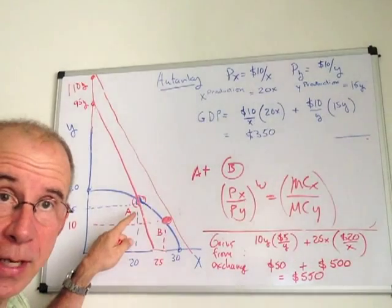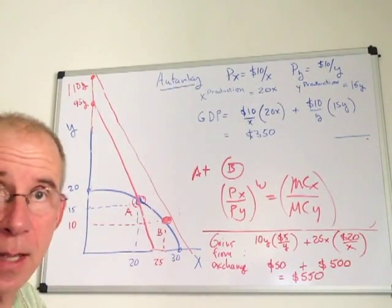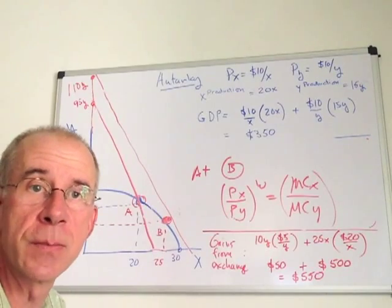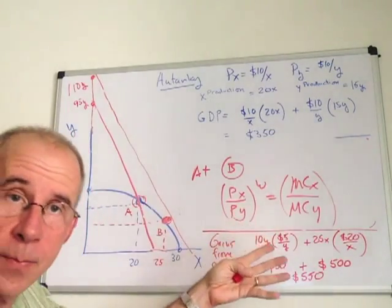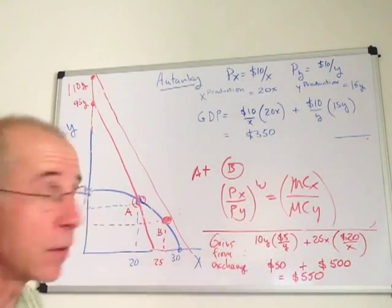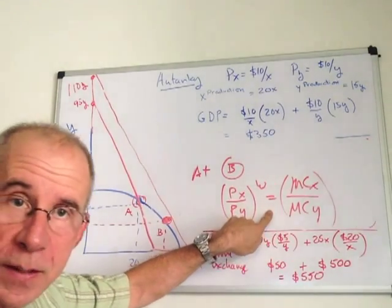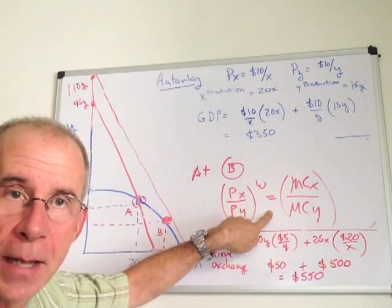With gains from exchange, that was not the case. You had incentives to change the production levels. Now, when we allow production to move in response to the change of prices, we get this equilibrium outcome.